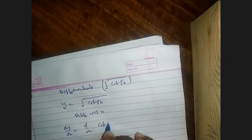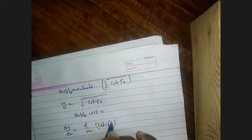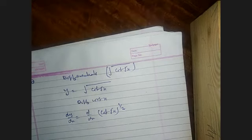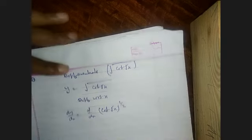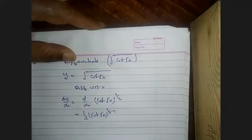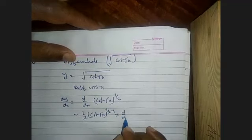dy/dx is equal to d/dx of (cot(√x))^(1/2). This is the power function and we apply the chain rule. By the chain rule, we use the power function, so we bring down 1/2.